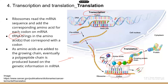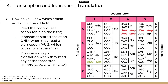Most proteins have multiple chains, though some proteins may have just one polypeptide chain. The concept of a codon is a set of three nucleotides that correspond with a particular amino acid.